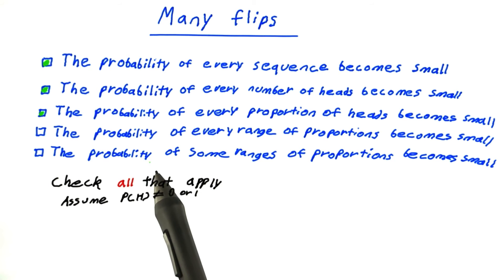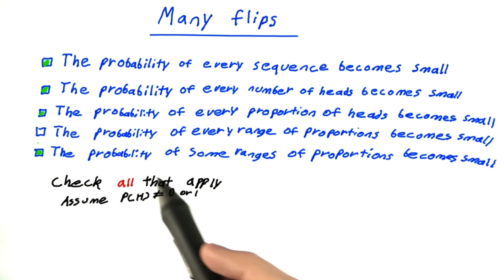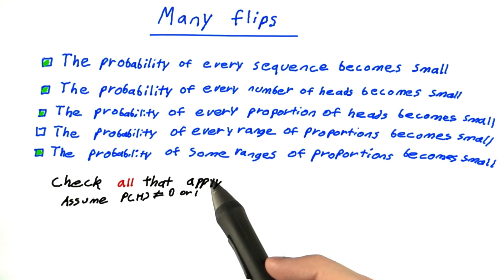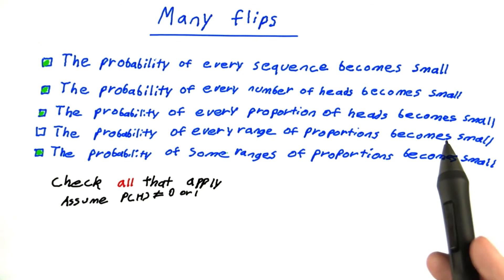And the probability of some ranges of proportions becomes small. Well, this will also be true. Consider something improbable, like getting a proportion below 10% on a fair coin. That's going to tend to become rarer and rarer as you flip it more times, because the same rare or unlikely event has to keep repeating itself.